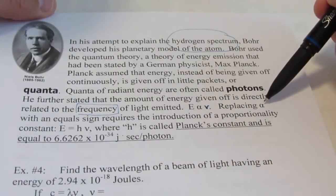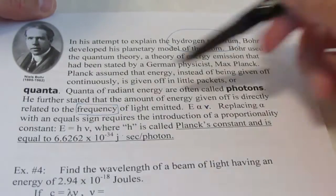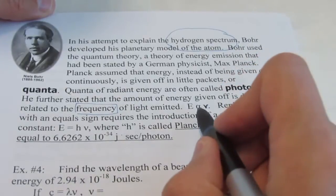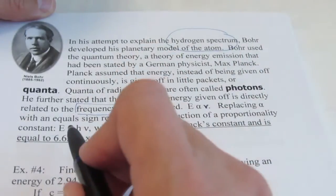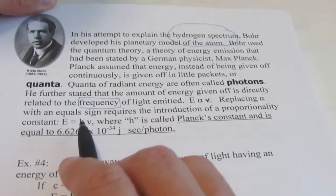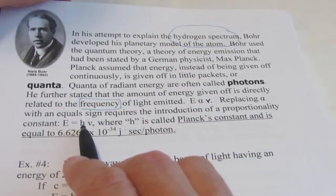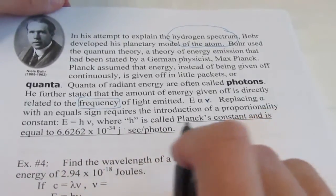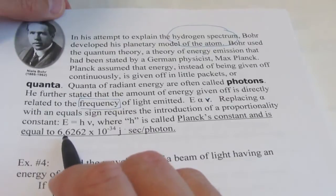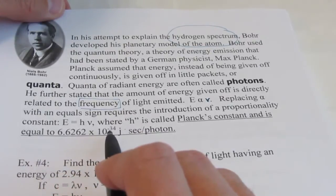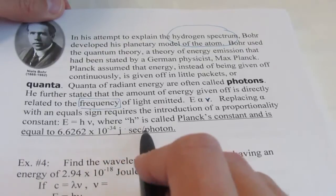Replacing alpha, or that proportionality sign, with an equal sign requires the introduction of a proportionality constant. So whenever we get rid of a proportionality sign and replace it with an equal sign, we need to add a proportionality constant. And in this case, it's the lower case letter H. H is referred to as Planck's constant and has a numerical value of 6.62 times 10 to the negative 34th joule seconds per photon.